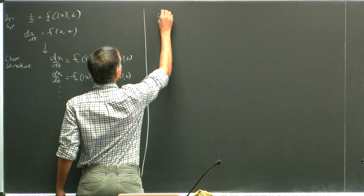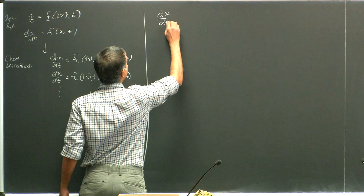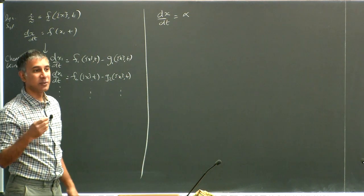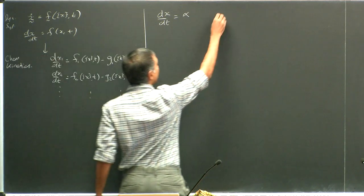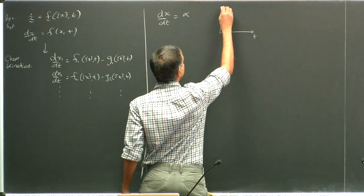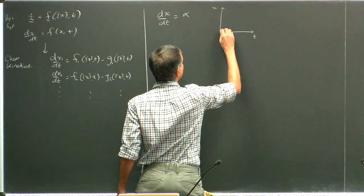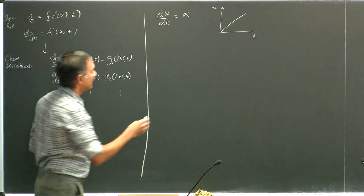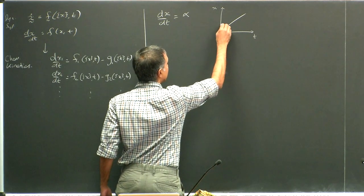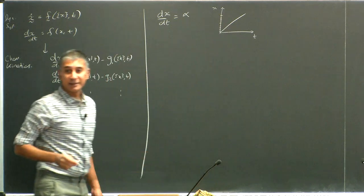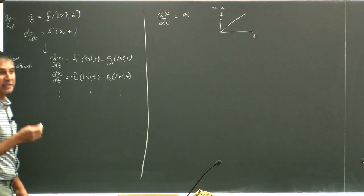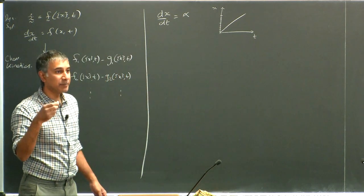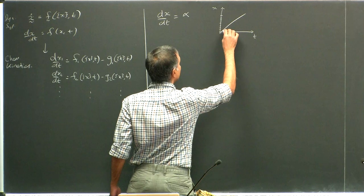A very simple example of such a process is simple standard creation of a molecule at a constant rate. The solution to this equation, starting from x(0) = 0, is a straight line. But since molecule numbers are discrete, the answer cannot possibly be a straight line — you can't have 0.5 molecules — so it must be some step-like function.